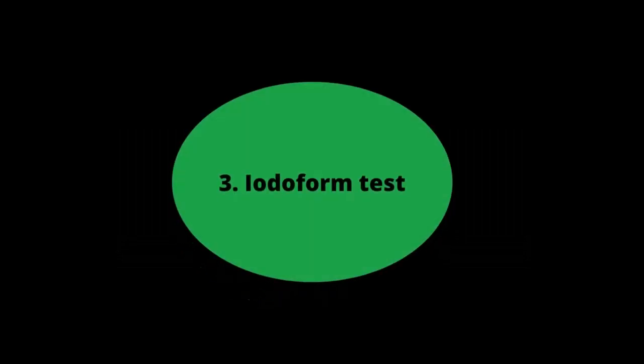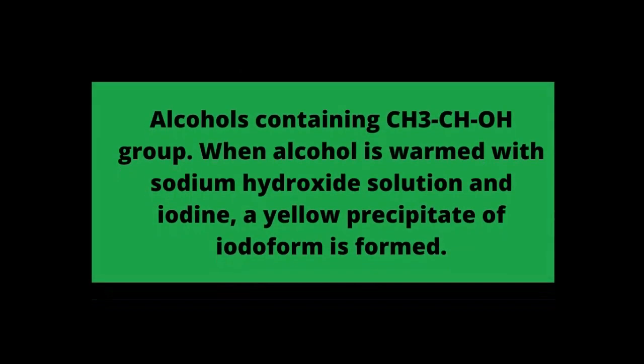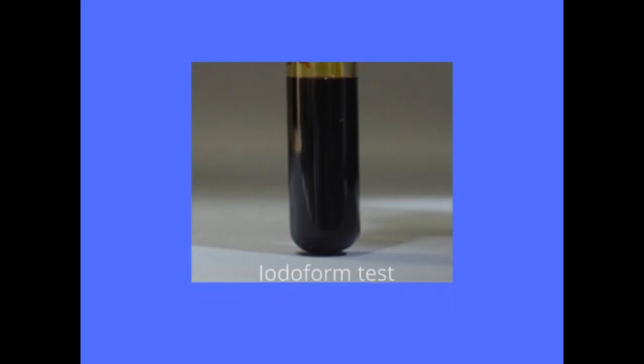The iodoform test can be conducted for the detection of the alcohol functional group. When alcohol is heated in the presence of sodium hydroxide and iodine, it gives a dark yellow color precipitate, which confirms the presence of alcohol.